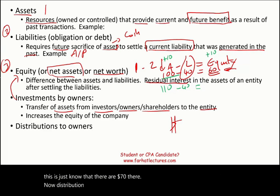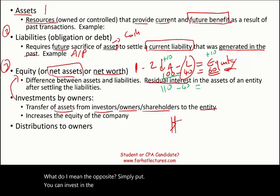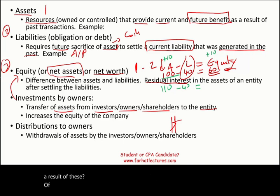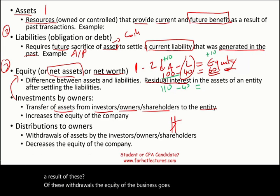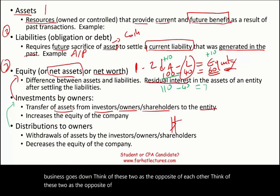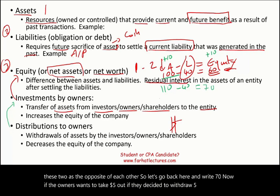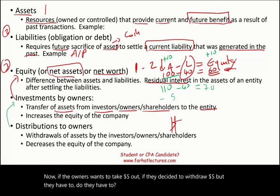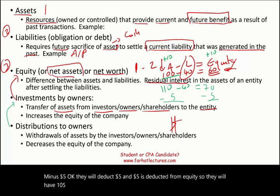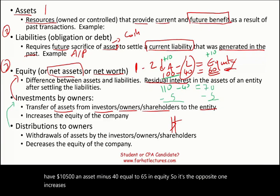Distribution to owners is basically the opposite of investment by owners. You can withdraw assets from the company, and as a result the equity of the business goes down. If the owners want to withdraw $5, that $5 is deducted from equity — so assets go to $105, liabilities stay at $40, and equity becomes $65.